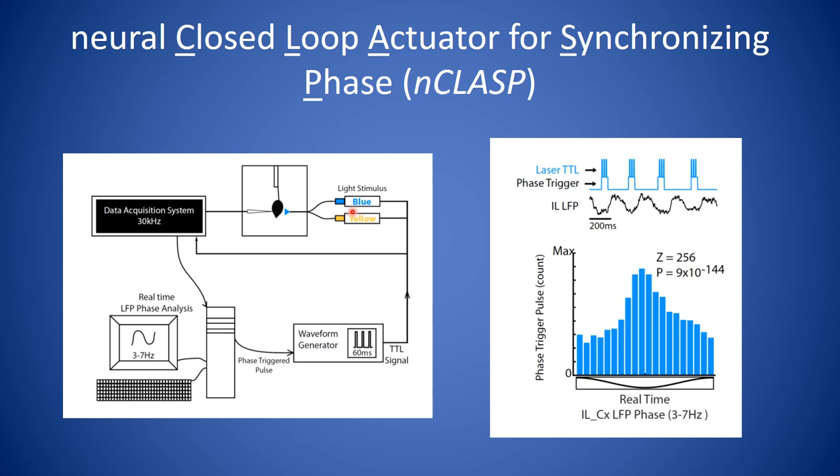The blue light in this case activates channel rhodopsin, which causes cells to fire or the wave to occur at a higher frequency. The yellow light is a control. As you can see, we can generate this high-frequency activity in thalamus, timed to real-time oscillatory activity in the infralimbic cortex. We're able to generate this network pattern that we see in our model. This shows our ability to trigger the laser relative to activity in real-time in infralimbic cortex. We're able to do that with high statistical significance.